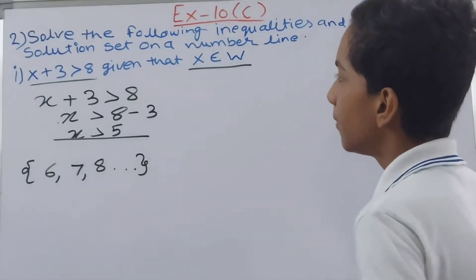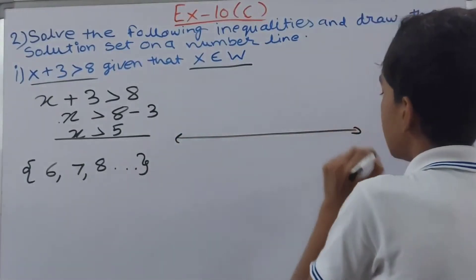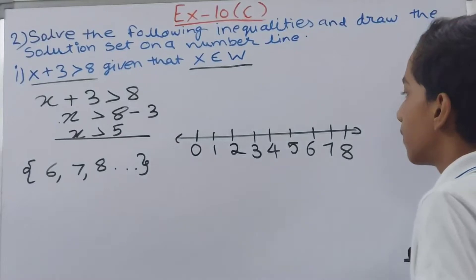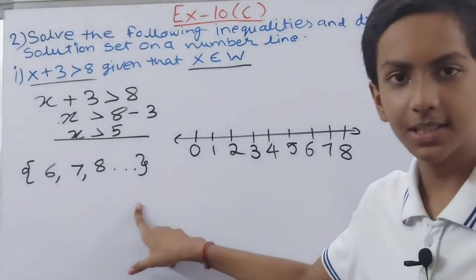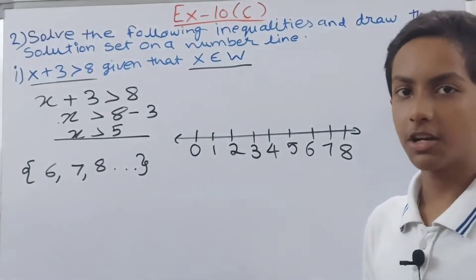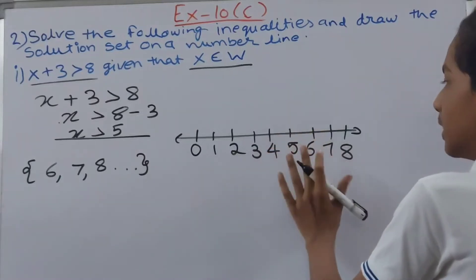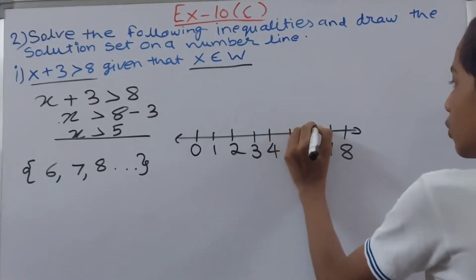Now what we have to do is represent this on the number line. And now you can see the numbers which have the value of x in them, these numbers are written in this solution set. So we simply go ahead and circle them. 6, 7 and 8 are those numbers. So we make a circle on top of them.